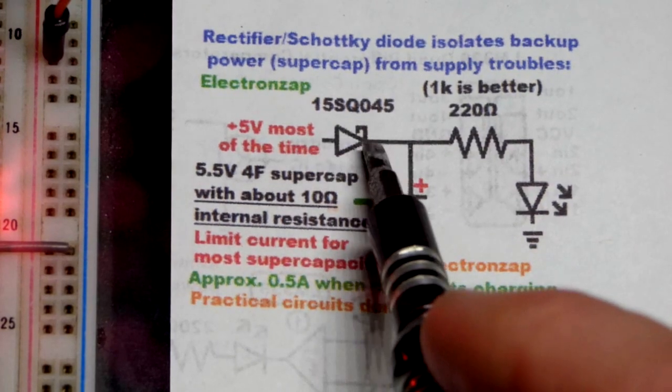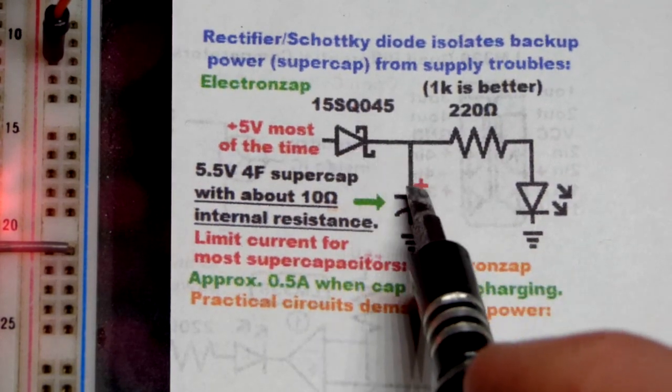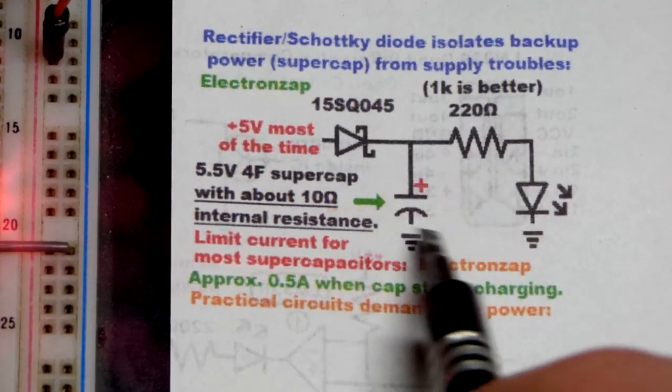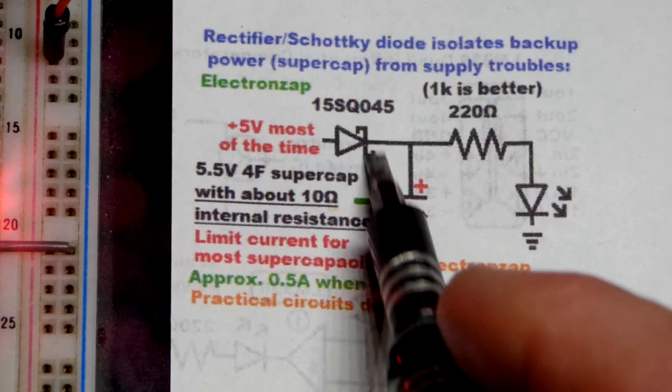This is a larger one though, so I have it in a holder. So it prevents current going back there. We only have one path now when we cut power for the current to go through the super capacitor right there.